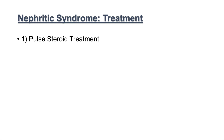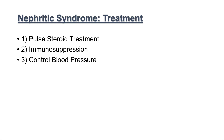Once we have nephritic syndrome, there are several treatment approaches. One is pulse steroid therapy to help reduce the glomerular inflammation. We can also give immunosuppression to help with this. We want to control the patient's blood pressure, as hypertension is present in nephritic syndrome. And we want to monitor the patient for progression to end-stage renal disease. Those are the four main goals of treatment.